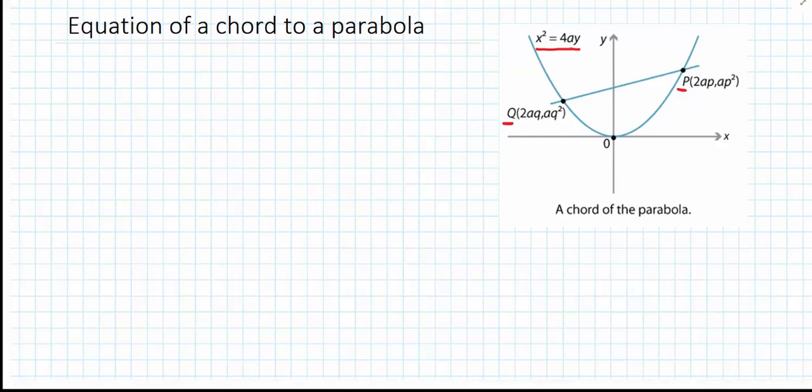You can see that the coordinates of p and q are given in parametric form: 2ap, ap squared and 2aq, aq squared.